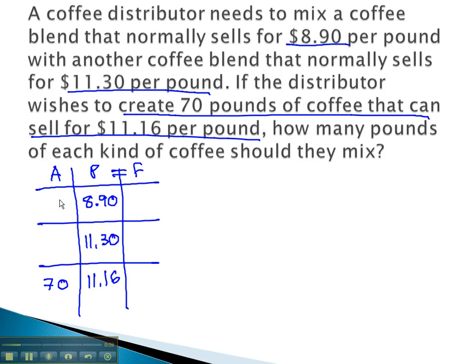We don't know the amounts of the first two solutions to use, so let's just call them x and y. We can now calculate the final amounts by multiplying the amount times the price, giving us 8.9x, 11.3y, and when we multiply 70 times 11.16, we end up with 781.2.